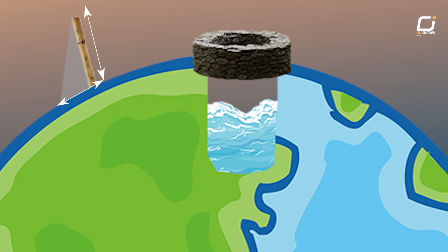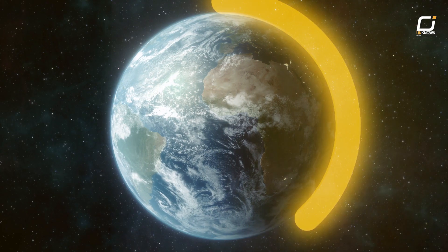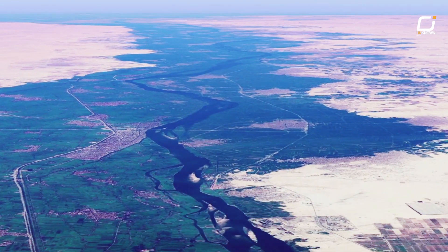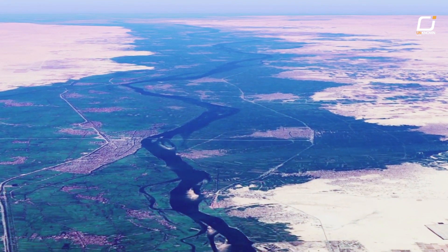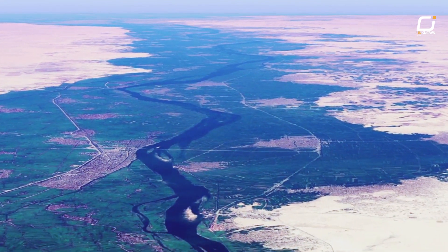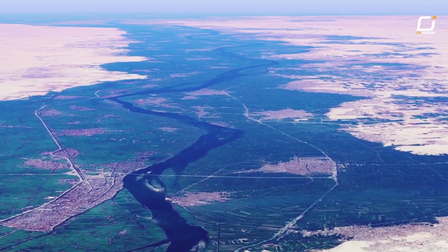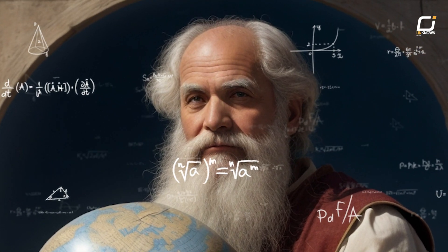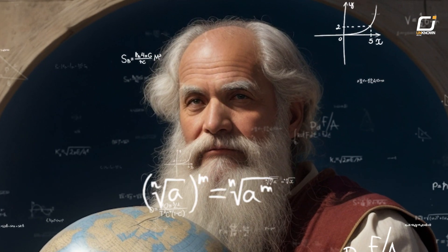Using basic trigonometry, he calculated the angle to be about 7.2 degrees. He knew there were 360 degrees in a full circle, so if he could determine the distance between Alexandria and Syene, he could multiply that distance by 360/7.2 to get the full circumference.